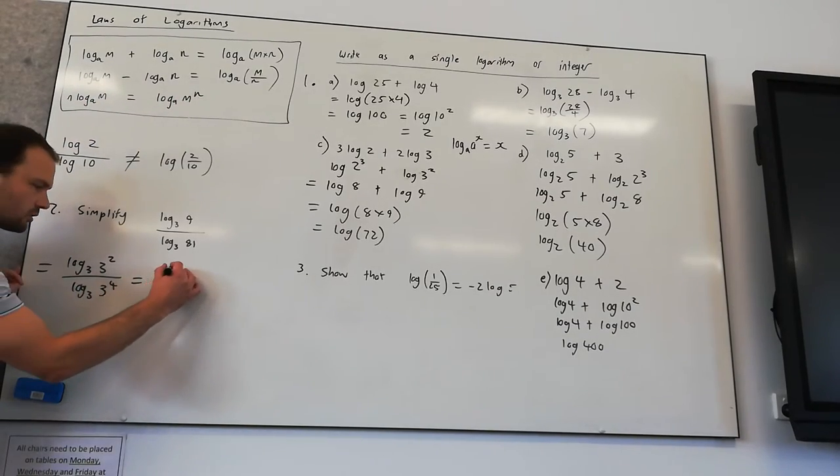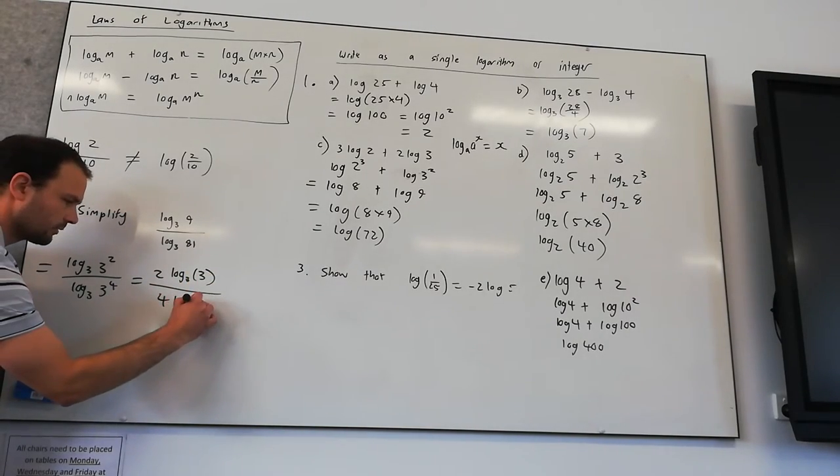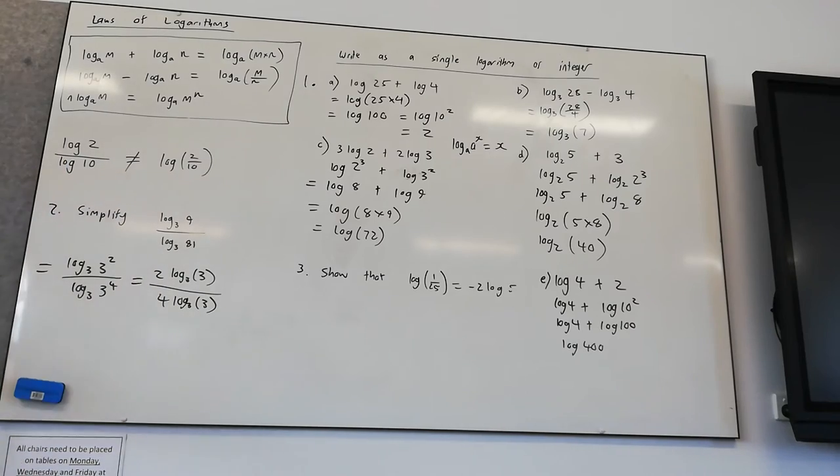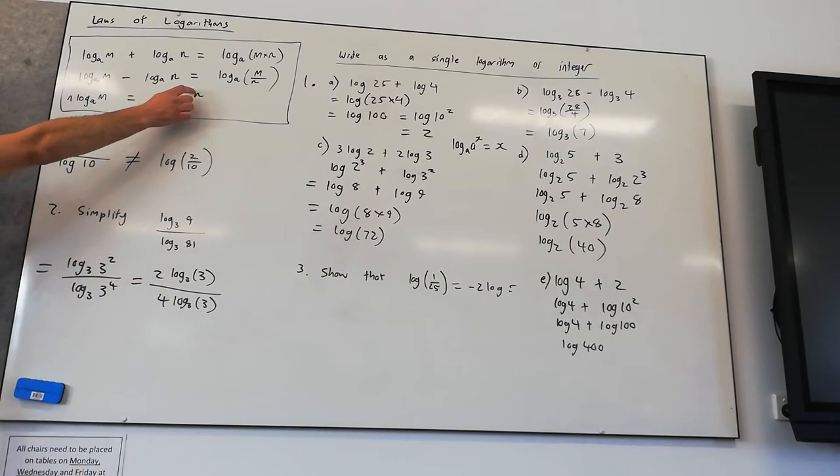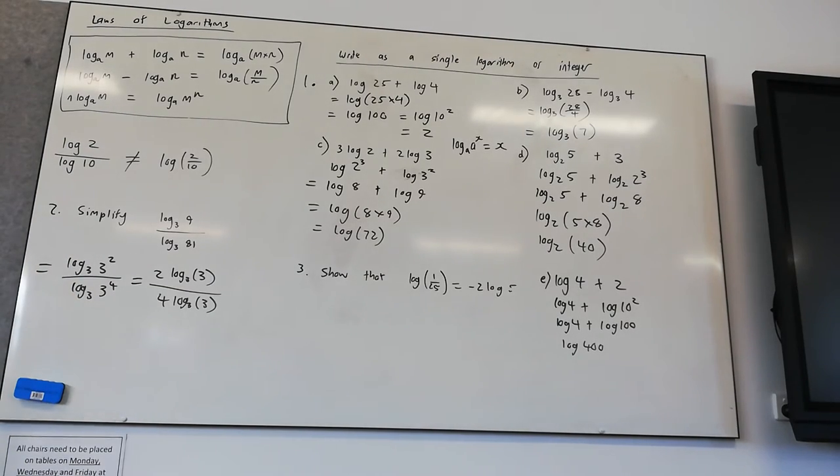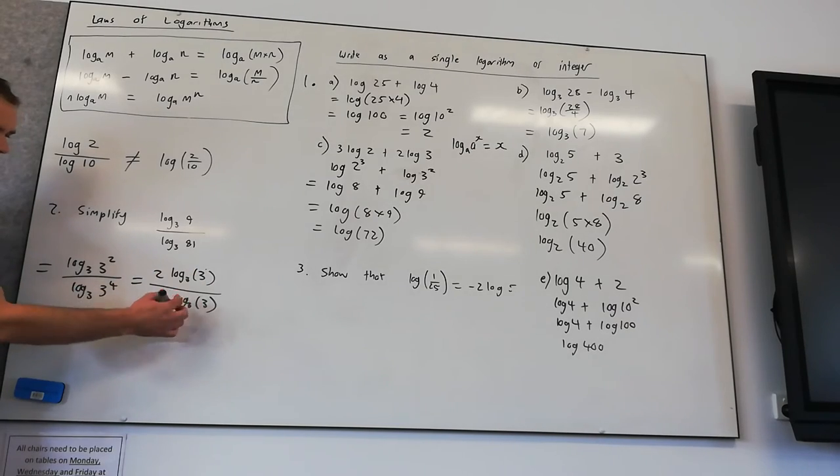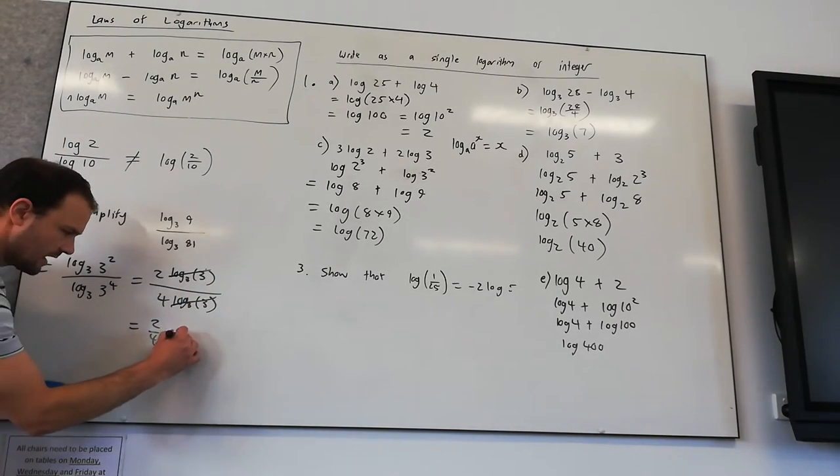So this becomes 2 log in base 3 of 3 on top of 4 log in base 3 of 3. So all I've done there, here we've expressed 9 as 3 squared, 81 as 3 to the power of 4. And then our rule is if we have a power, we can move that power to the front. So we move that 2, that goes there. That 4, that's come out the front here. Now we have the same factor at the top and the bottom. See how we've got log in base 3 of 3 and log in base 3 of 3. That can just cancel. And so we're left with 2 on 4, which is just a half or 0.5.